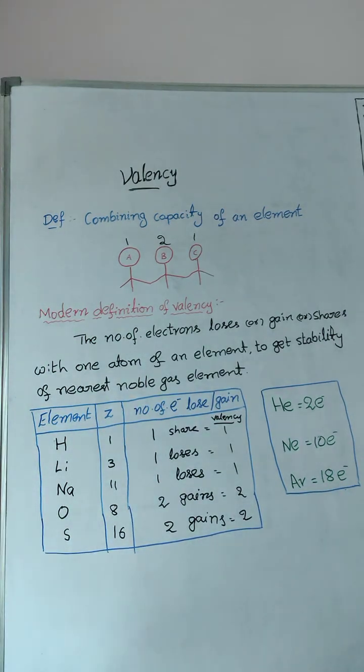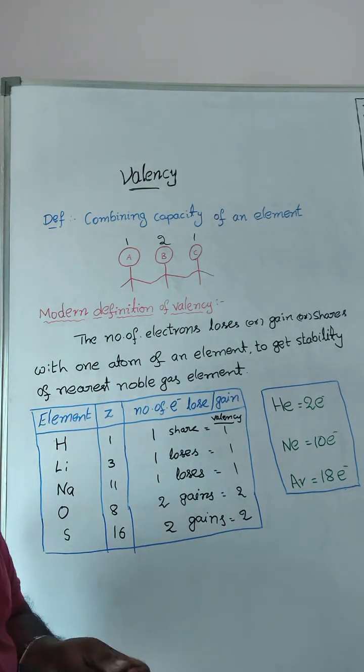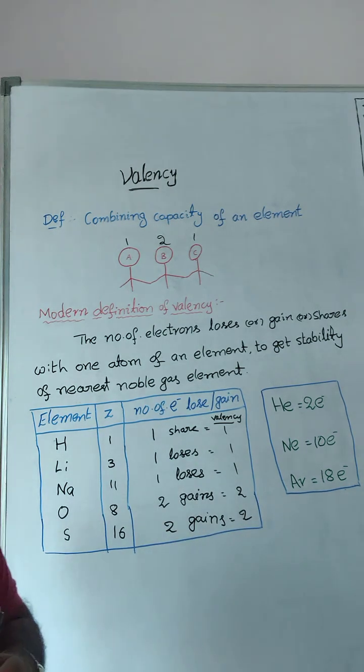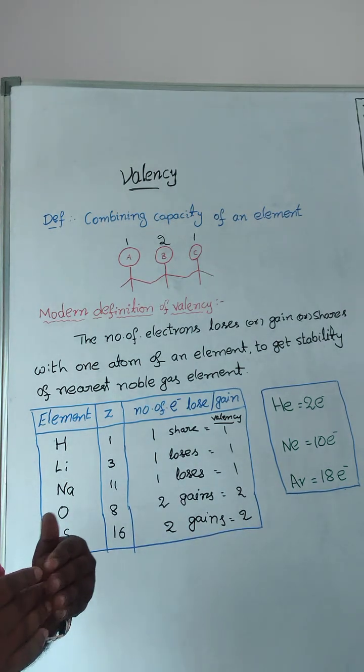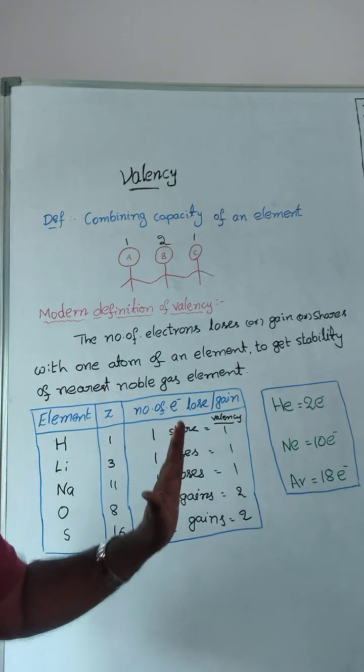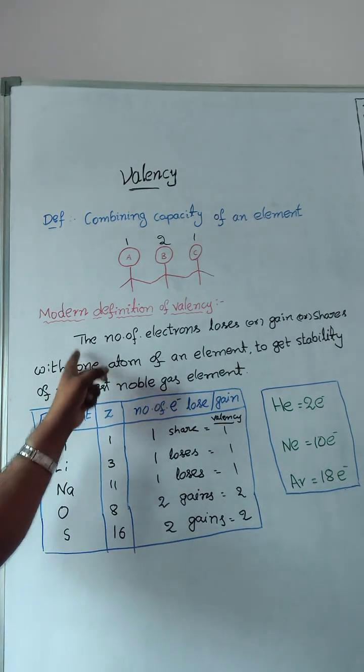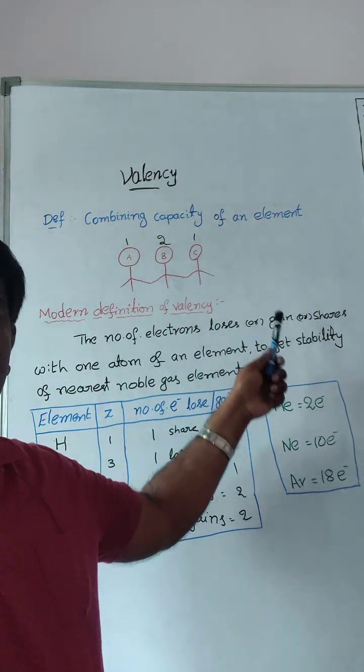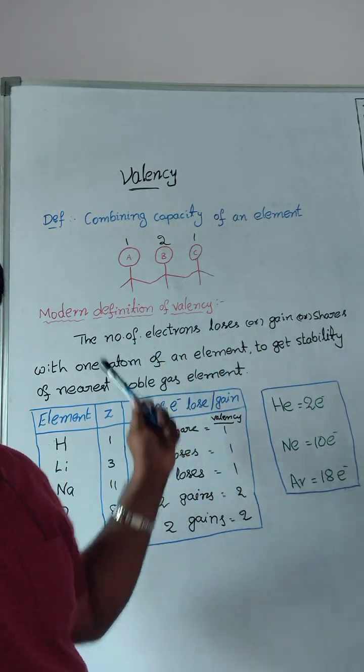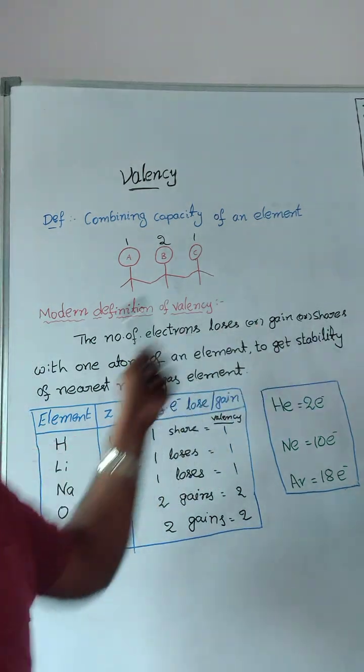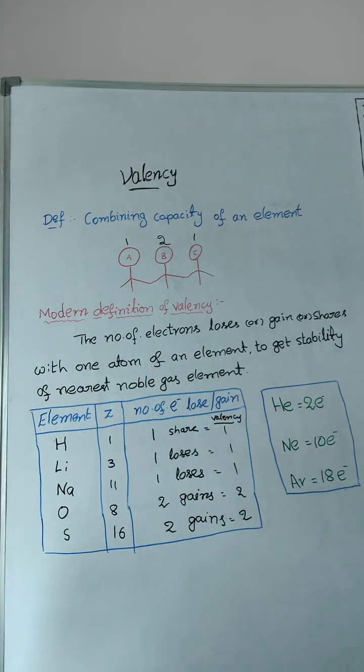Modern definition of valency. To get stability of nearest noble gas element, it may lose electrons, gain electrons or share electrons. So the number of electrons loses or gains or shares with one atom of an element. Why is this happening? To get stability of nearest noble gas element.